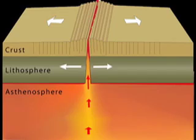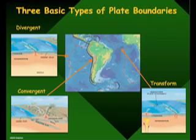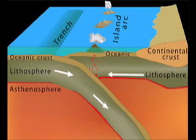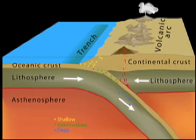Convergent — plates moving together. And there are some different flavors of these convergent boundaries. There are two of the three possibilities shown here. Here's a plate carrying a continent, and here's a plate that is purely oceanic. If you have a convergent boundary between a continental plate and an oceanic plate, it's the oceanic plate that's going to subduct — go back down into the mantle.